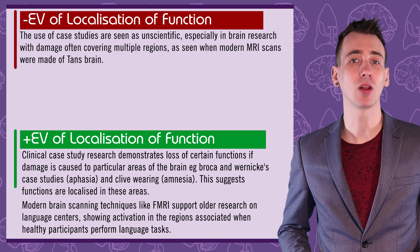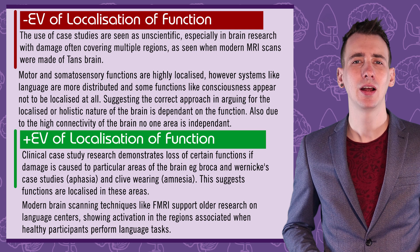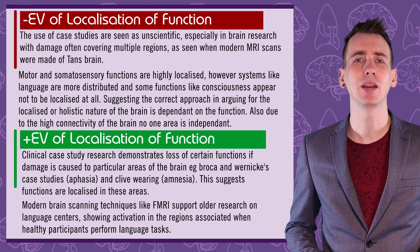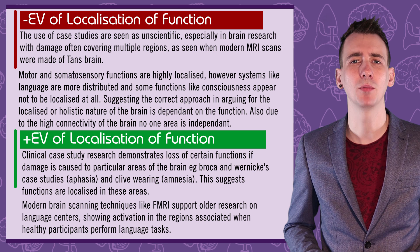Some functions appear to be more localised than others. While simple motor and somatosensory functions are highly localised, the language system is more distributed, and more complex systems like personality and consciousness appear not to be localised at all. Also, due to the complex connections of the brain, it could be argued that as no one part is independent from the rest, no function is completely localised.